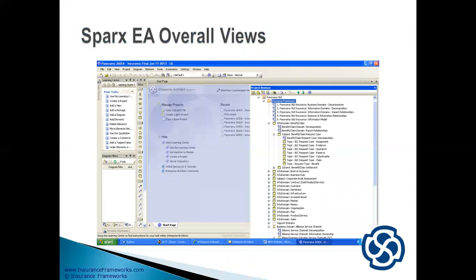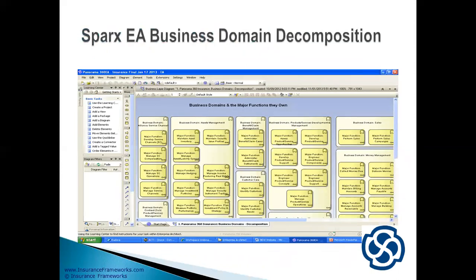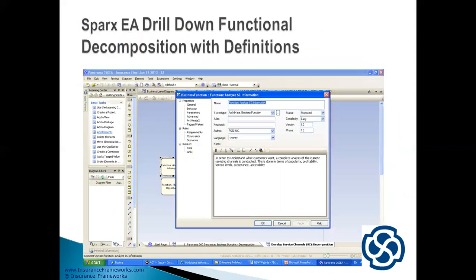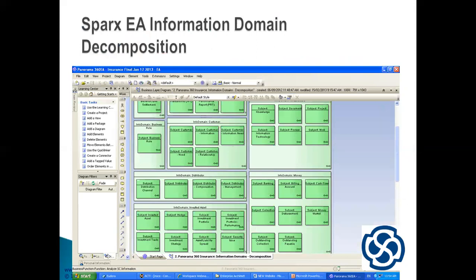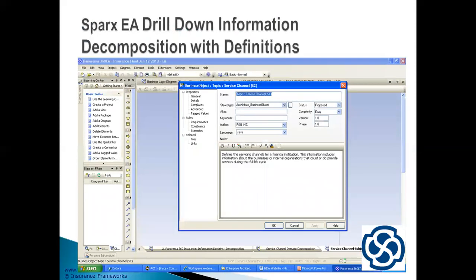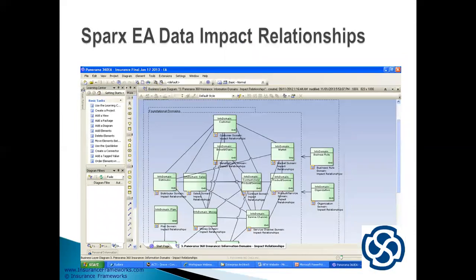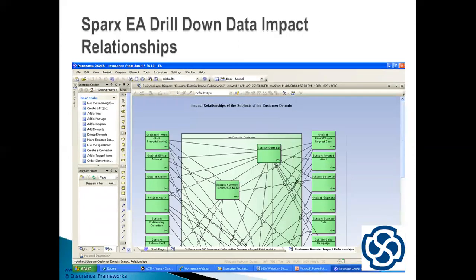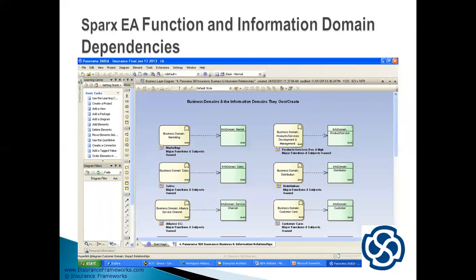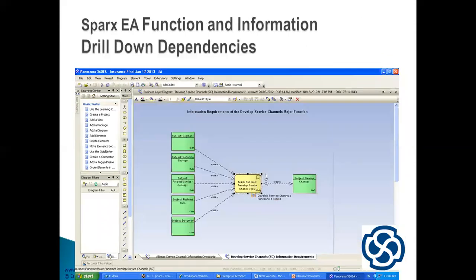Here are the views that we have in Panorama 360 for Sparx Enterprise Architect. We have the overall view, the business domain decomposition three levels down with definitions, the information domains decomposition with definitions, a data impact relationship, and an information domain dependencies between the functions and the information. We drill down and it shows the dependencies that exist between the information managed by the business capabilities.